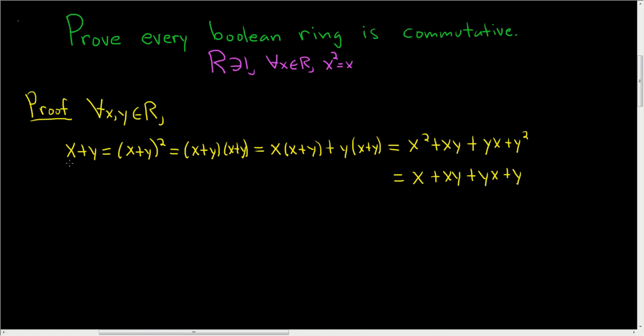If we subtract x and we subtract y from both sides of this equation, we end up with 0 is equal to xy plus yx. So this means that xy is equal to minus yx.